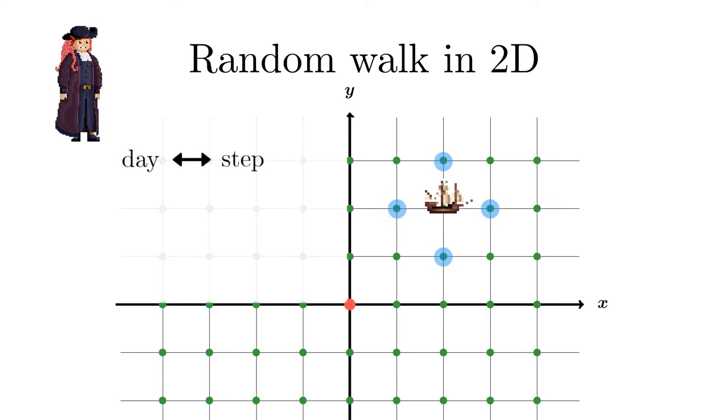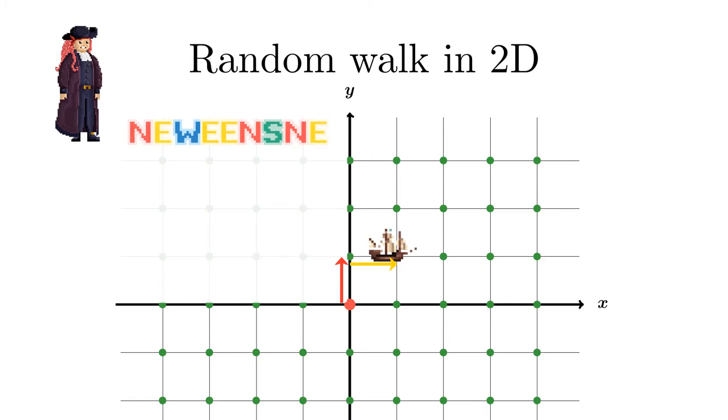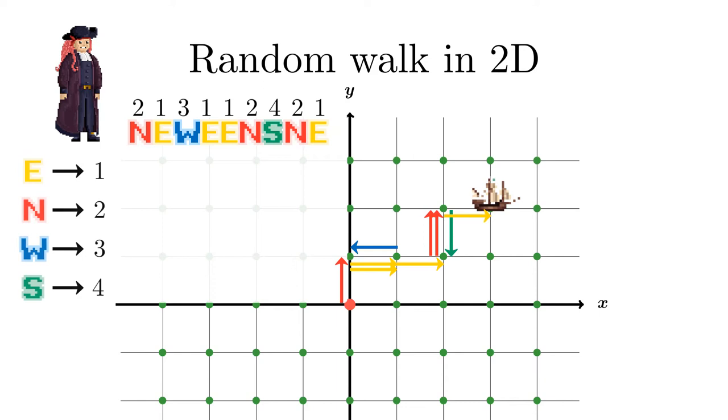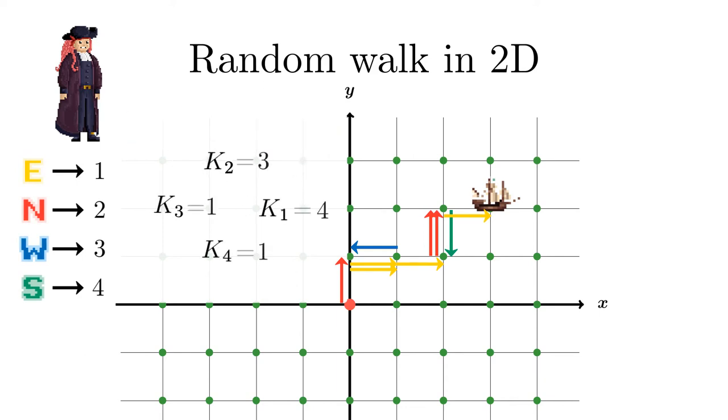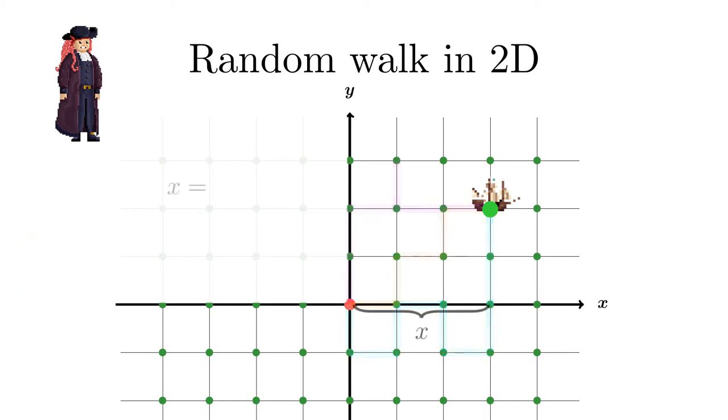Each possible ship position has four nearest neighbors that are a distance one away. Every day, which we call a step, the ship, now also called a walker, randomly jumps to one of these nearest neighbor positions. The journey is therefore characterized by a sequence of directions the ship sails. We map the cardinal directions to random variables and count the frequencies how often a direction occurs. There are several paths that lead to the same final position which is given by the x or y coordinate that can be calculated from the frequencies of the directions.